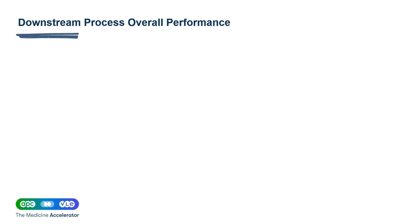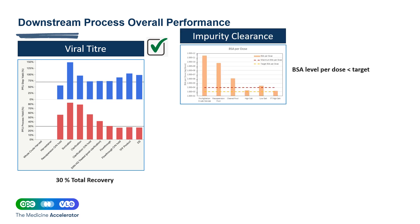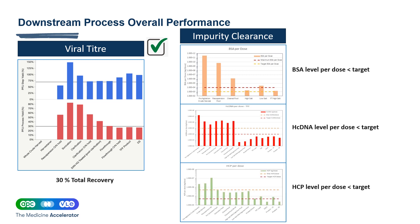With the downstream process train developed at APC, we have consistently demonstrated good overall viral recovery across the process of approximately 30%, meeting the target set by the client. The process also showed impurity clearance meeting the target and well below allowable limits for BSA, host cell DNA, and HCP.